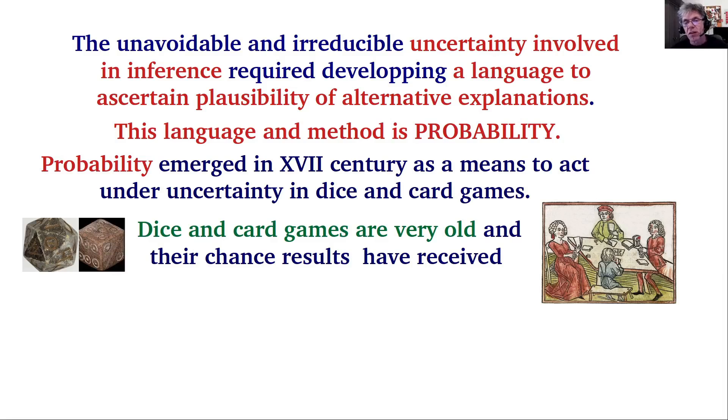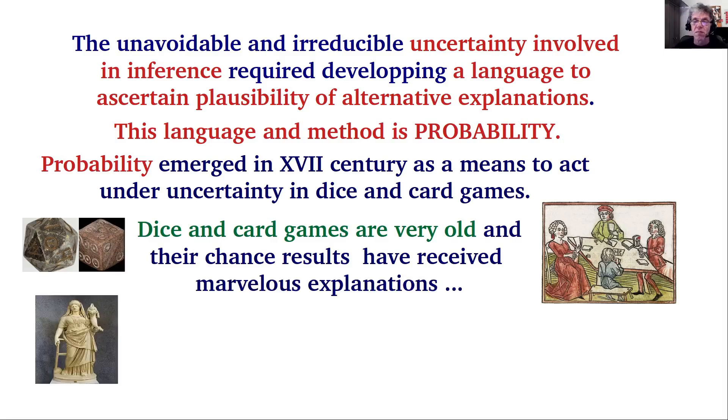Dice and card games are very old, as seen in the Babylonian and Roman dices with which soldiers gambled away their salaries, and in card games also played during medieval times. The chance results received marvelous and extraordinary explanations, including that the fate of the player was related to the favor of the goddess Fortuna, and therefore we did not need any formal theory to explain the uncertainty of plausible results of card and dice games.